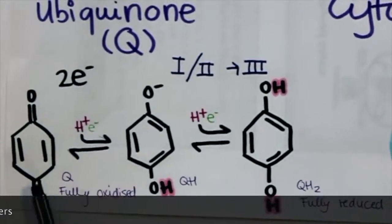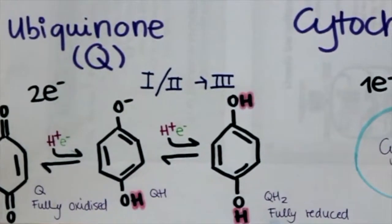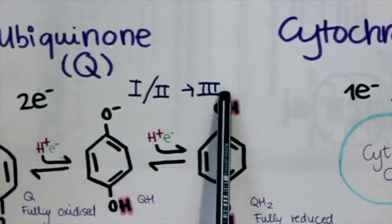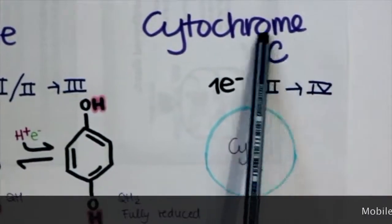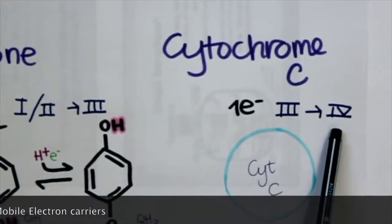The fully oxidized form has no electrons. The intermediate has 1, and the fully reduced ubiquinone has 2. It can collect electrons from complex 1 and 2 and bring them to complex 3. Cytochrome C can carry 1 electron from complex 3 to complex 4.